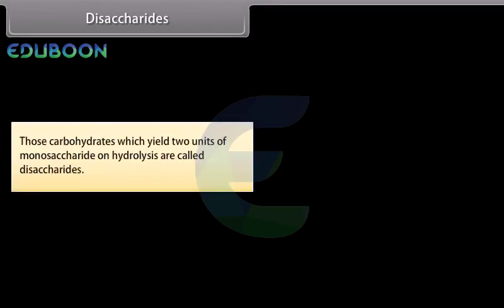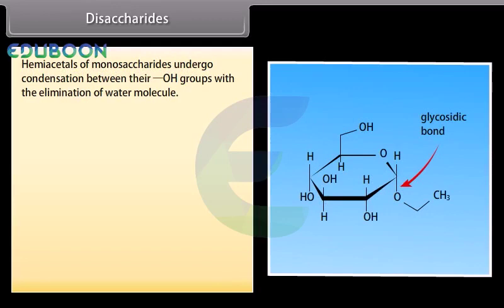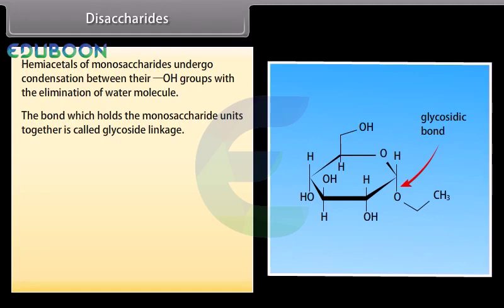Those carbohydrates which yield two units of monosaccharide on hydrolysis are called disaccharides. For example, sucrose yields alpha-D-glucose and beta-D-fructose on hydrolysis. Disaccharides are formed by condensation reaction between two monosaccharide units. Hemiacetals of monosaccharides undergo condensation between their OH groups with the elimination of a water molecule. The bond which holds the monosaccharide units together is called glycoside linkage.